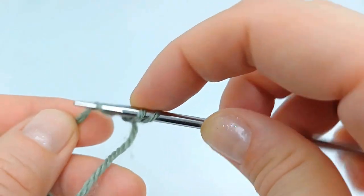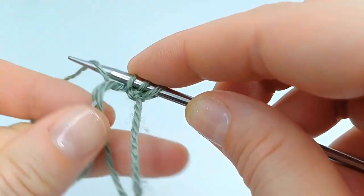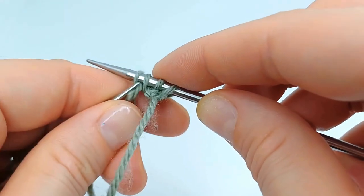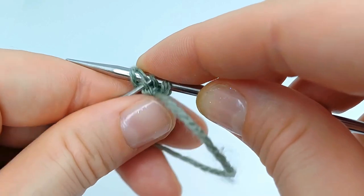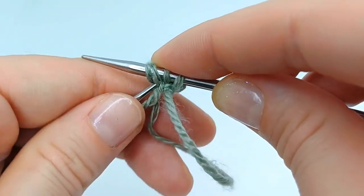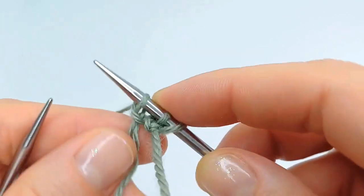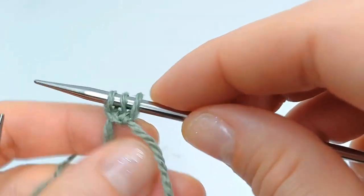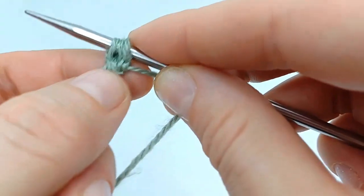Now we make our third stitch. This might be a little bit uncomfortable, but I find that this way it's the least confusing method to make pinhole cast on. This way we have already our first sort of row done.